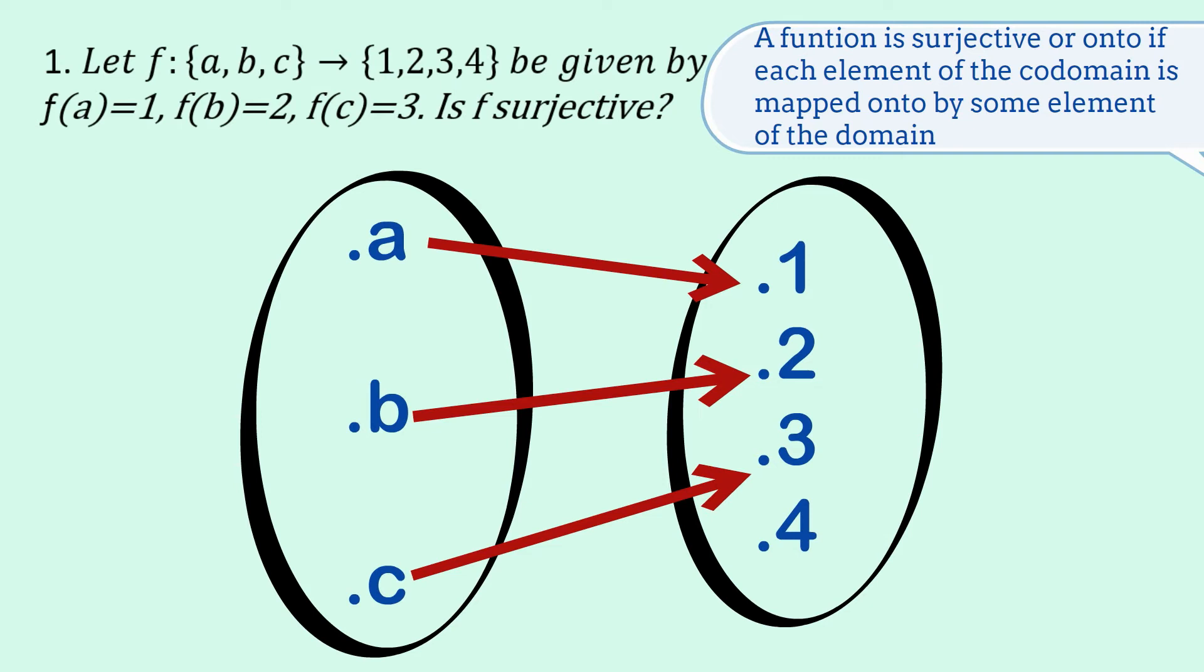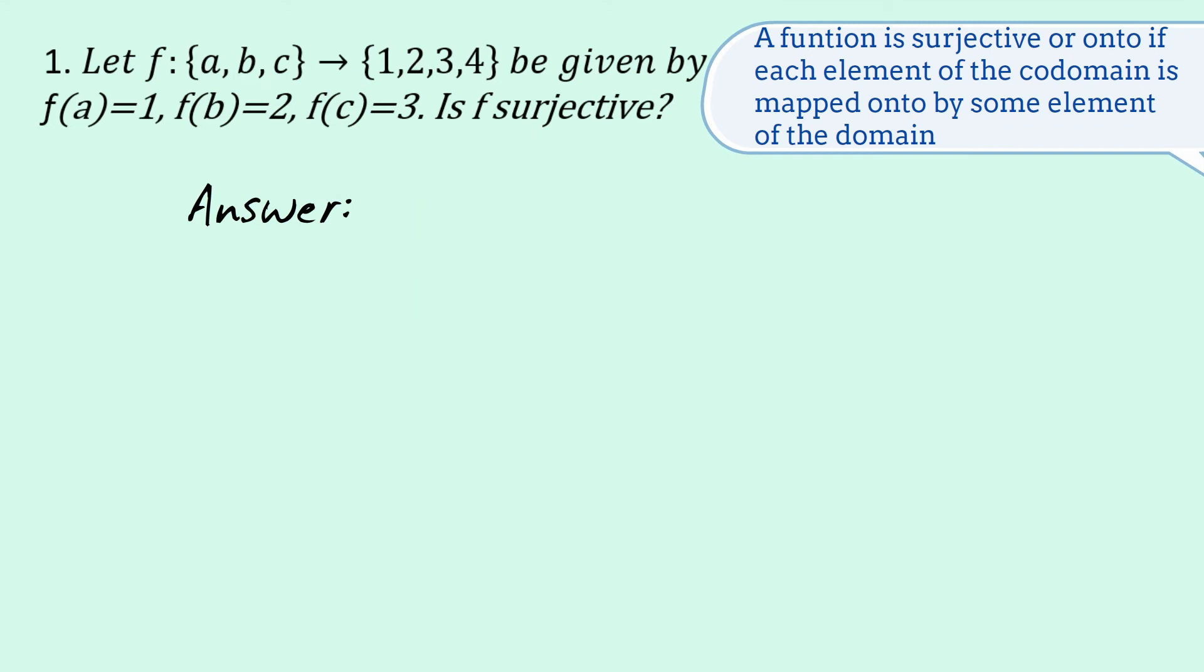So because that four is not mapped, because there's no line going to four, then we can say that f is not surjective. So here's a possible way of expressing that solution to that question.